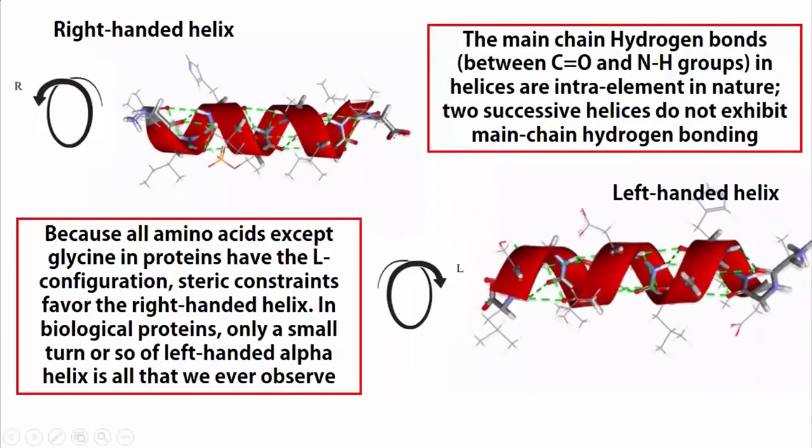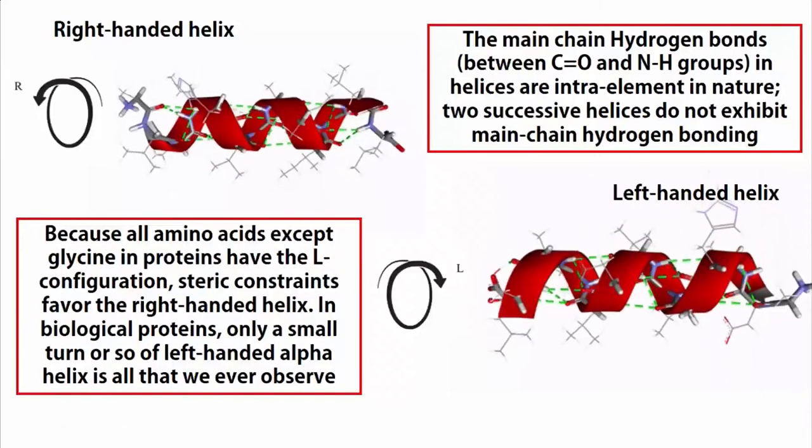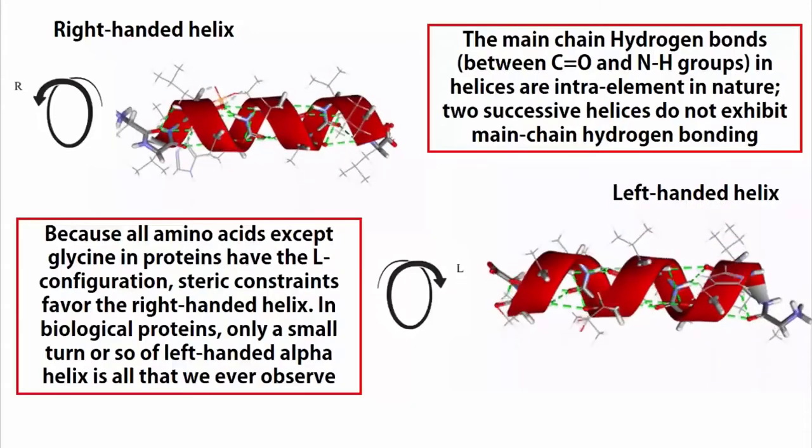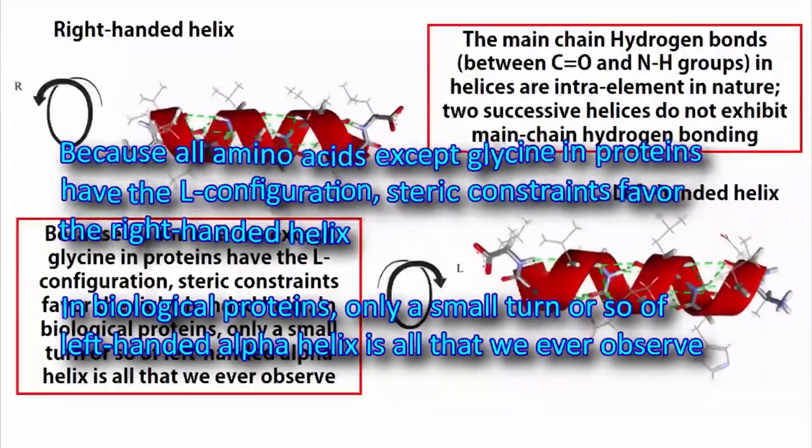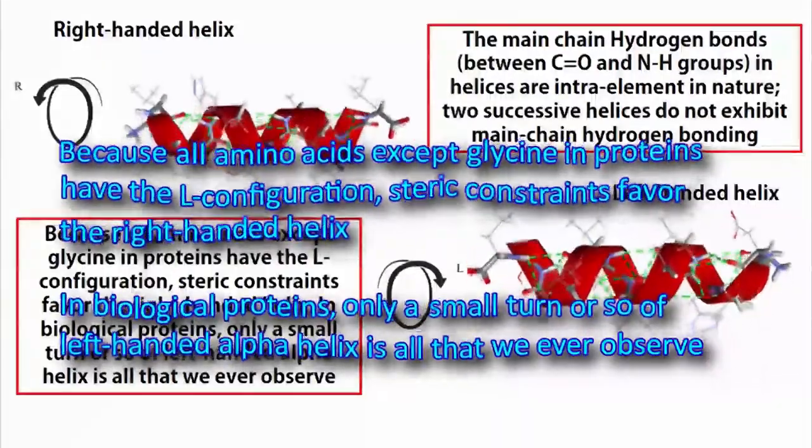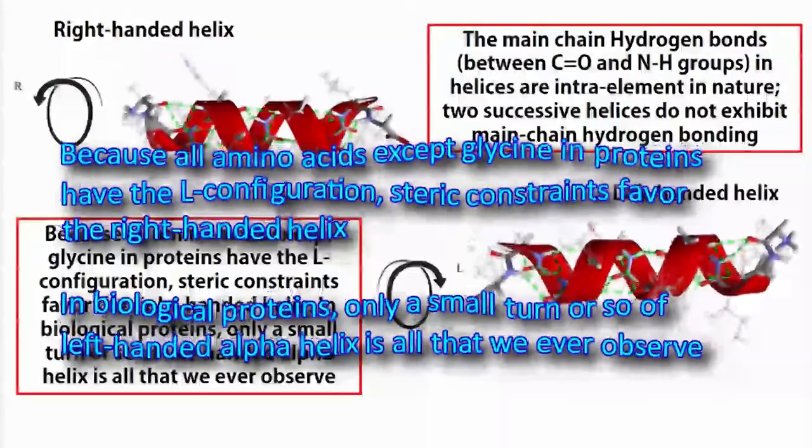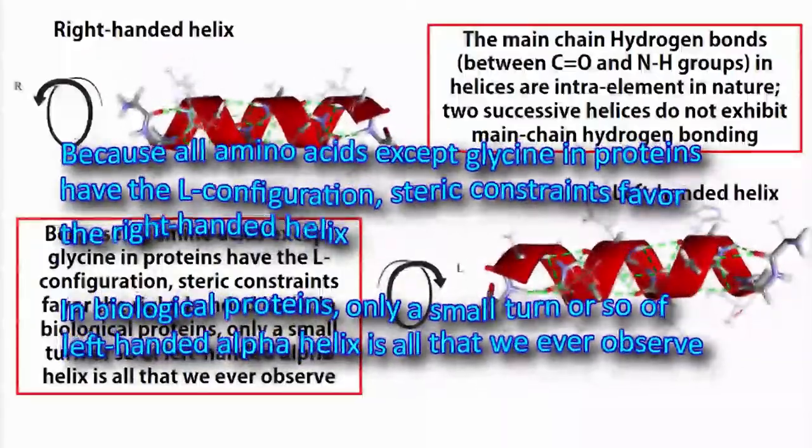Alpha helices can be right-handed or clockwise, or they can be left-handed and counter-clockwise. But because all amino acids except glycine in proteins have the L-configuration, steric constraints favor the right-handed helix.